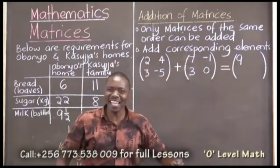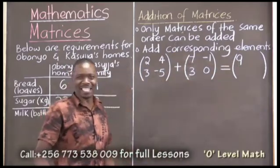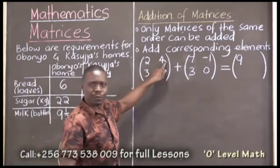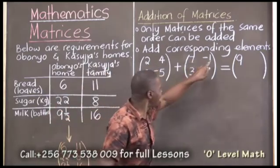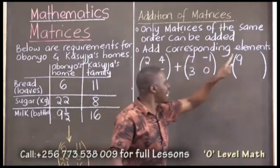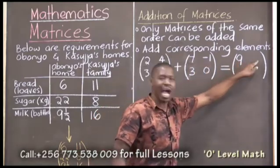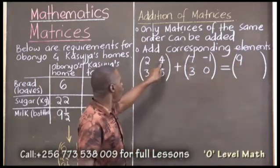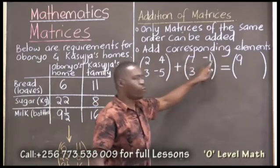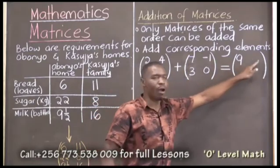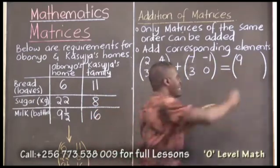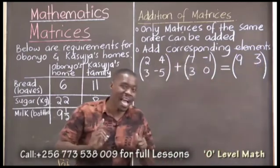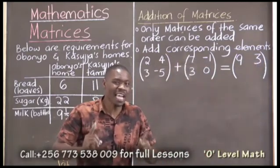Are we together? You must be understanding. The second element up plus the second element up gives me the second answer up. A 4 plus a negative 1 gives me a what? A 3. Wonderful. That is how we add matrices — corresponding elements.